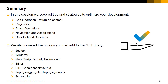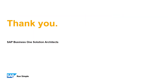In this session, we covered tips and strategies to optimize your development, such as the add operation with return no content option, pagination, batch operations, navigations and associations, and user-defined schemas. We also covered query options you can add to the GET query, like $select, $orderby, and so on. Don't hesitate to come back to review the available options, and please check the user manual for latest updates. We have now completed the SAP Business One Service Layer Development Optimization e-learning session. Thank you for your participation and see you soon.